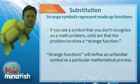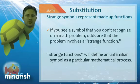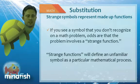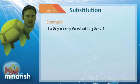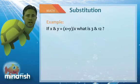Fundamentally, this is all about substitution. The symbol is not something you should have known, so you just need to substitute. In the example below, we have x and y equals x plus y divided by x. What is 3 and 12?